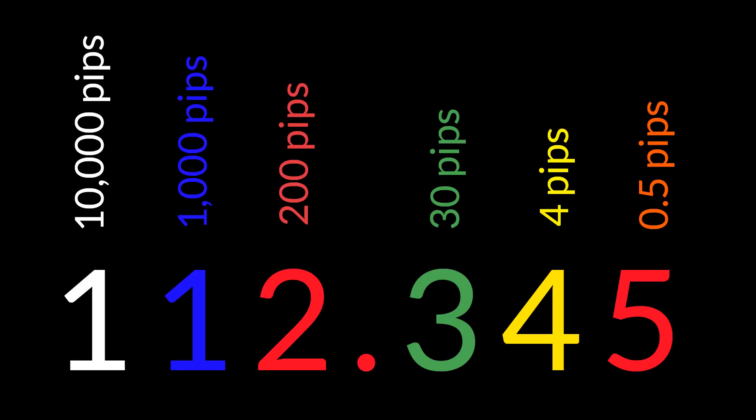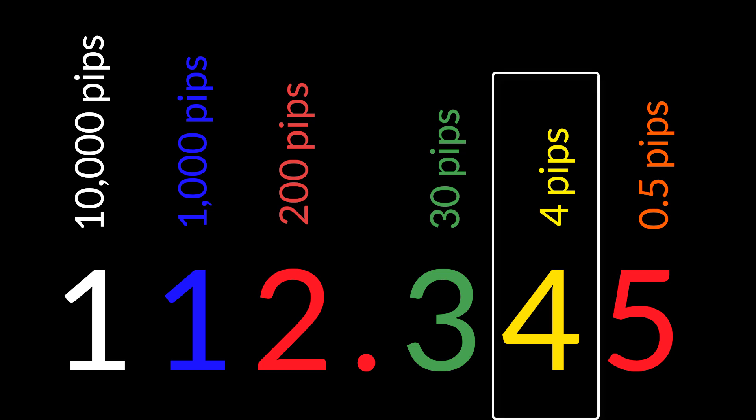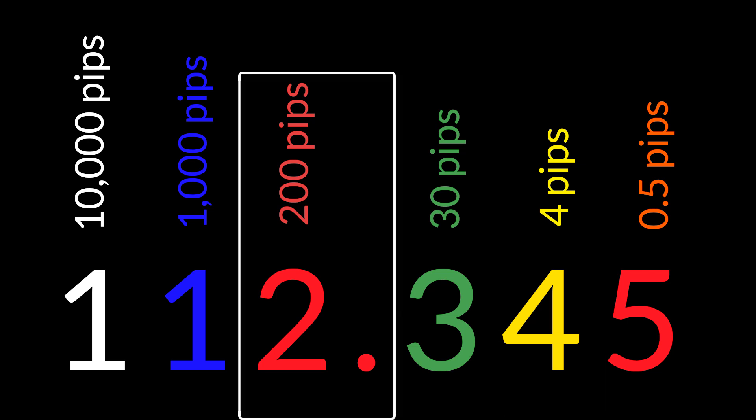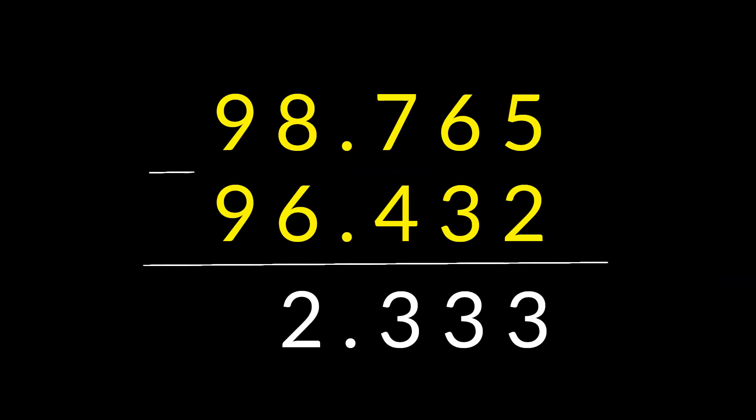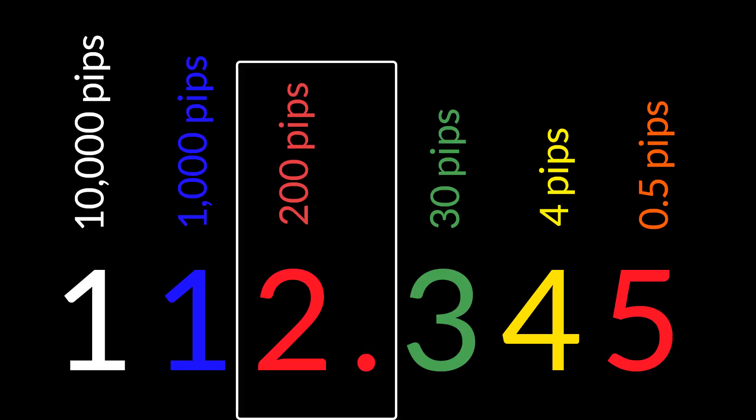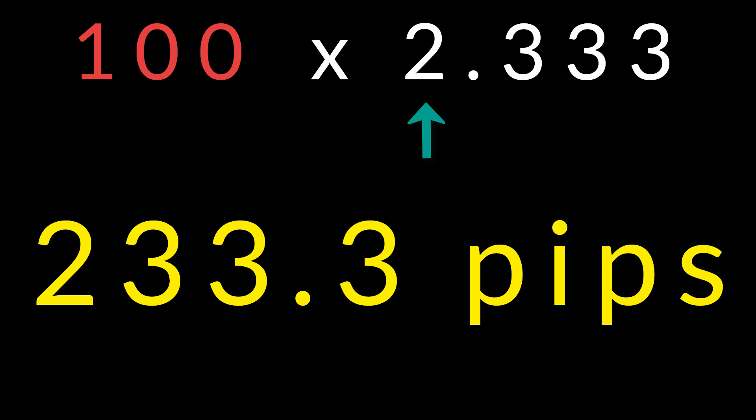The only exception to this rule are yen pairs, which take a different format — the pip is 2 digits to the right of the decimal. Here we have 4 pips, and the 2 represents 200 pips. To calculate the distance between two lines, subtracting gives us 2.333. Remember the number to the left of the decimal is hundreds, so that means we have a 233 pip move.